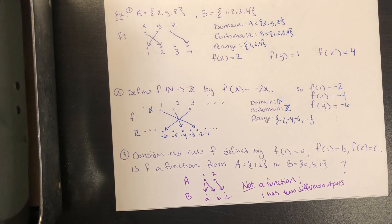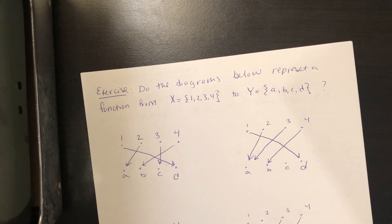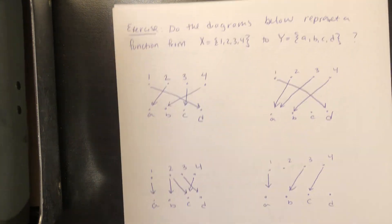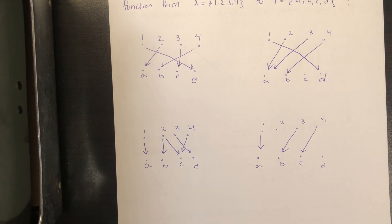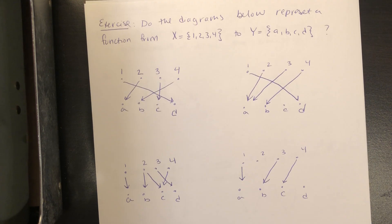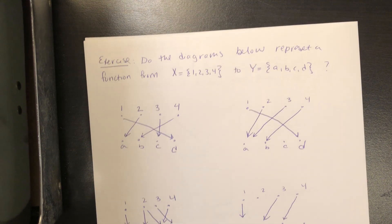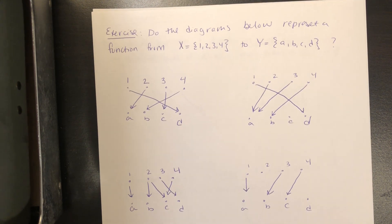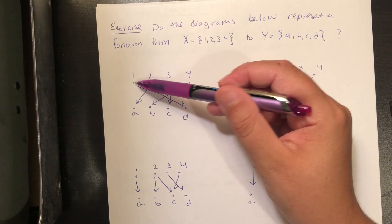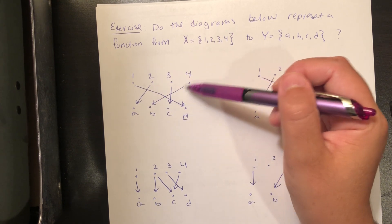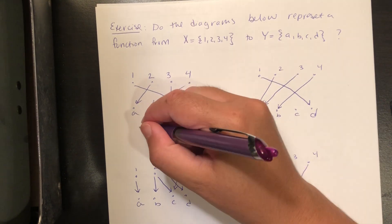Could you have two different inputs giving you the same output? As it turns out, the answer is yes. Let's look at some examples. Do each of these diagrams represent a function from X — that's 1, 2, 3, and 4 — to Y — A, B, C, and D? In the first diagram, 1 gets mapped to D, 2 to A, 3 to C, 4 to B. Nothing wrong with this — this is a function. Every input has exactly one output.